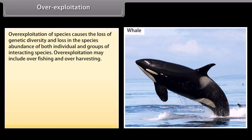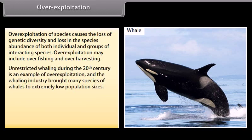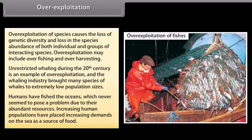Overexploitation of species causes the loss of genetic diversity and loss in species abundance of both individual and groups of interacting species. Overexploitation may include overfishing and overharvesting. Unrestricted whaling during the 20th century is an example — the whaling industry brought many whale species to extremely low population sizes. Increasing human populations have placed increasing demands on the sea as a source of food.